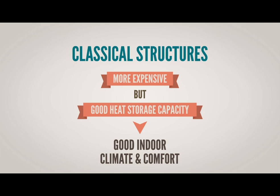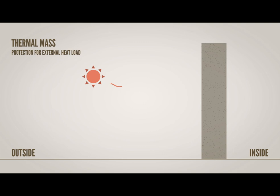Thermal mass helps to protect the house from overheating in summer, when solar load is stored in walls and radiating it back towards the outside when the temperature drops.